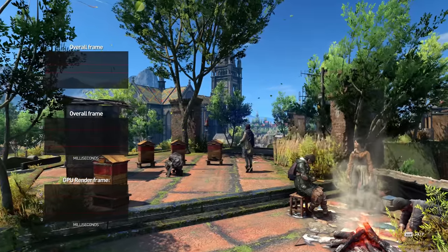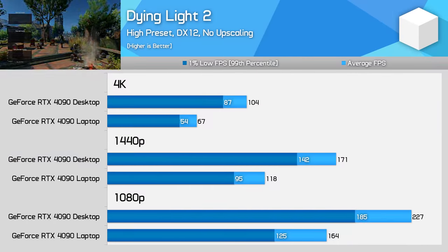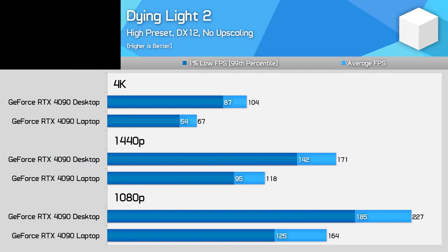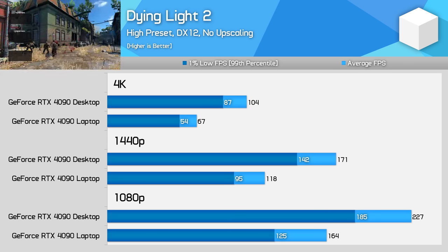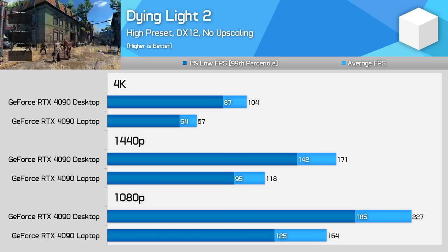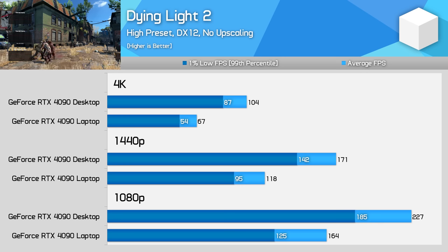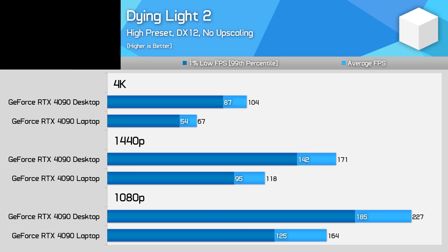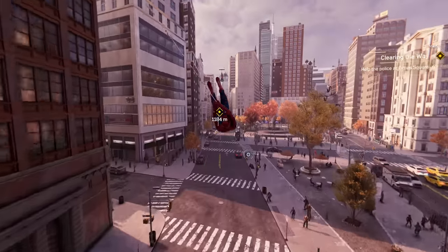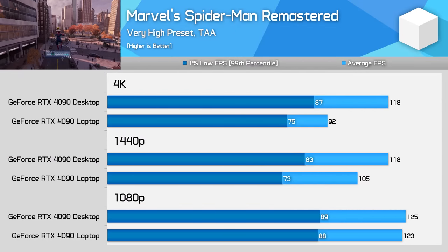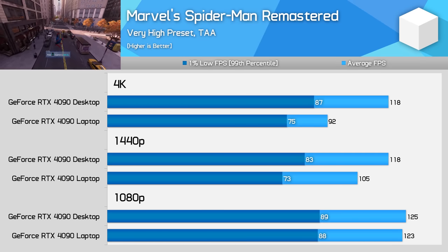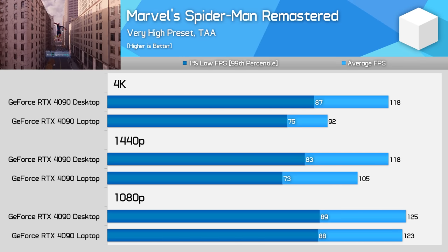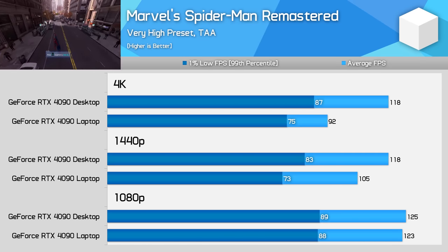In Dying Light 2, the game was pretty easily GPU bottlenecked most of the time, even using rasterisation. At 1080p, the desktop card was 39% faster, a margin that grew to 45% at 1440p, and 56% at 4K. While the laptop model is playable at 4K using these settings, the desktop is capable of a more high refresh rate experience. Perhaps the worst showing for the desktop configuration, and therefore the best for the laptop, was Spider-Man Remastered. At 1080p, the game is so CPU bottlenecked that there was really no substantial performance difference between the desktop and laptop models.